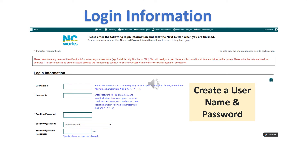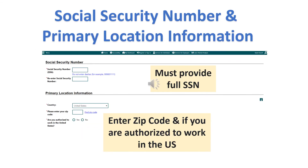Create a username and password. Please follow the instructions listed and make sure you write it down. Please input your full social security number, and also under primary location information, the country, your zip code, and yes or no if you're authorized to work in the United States.